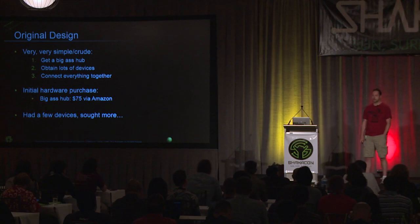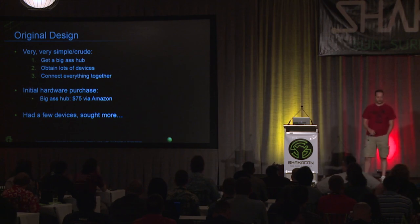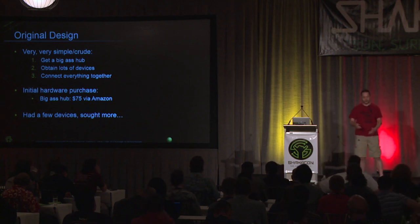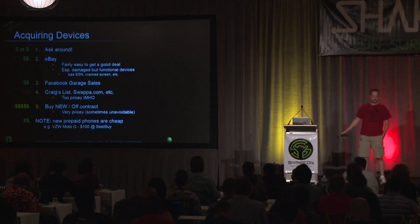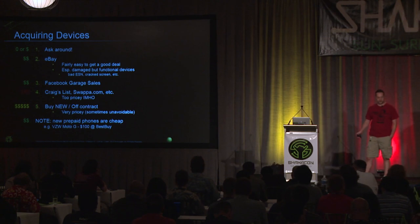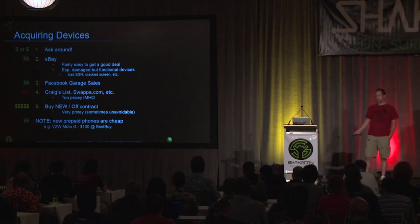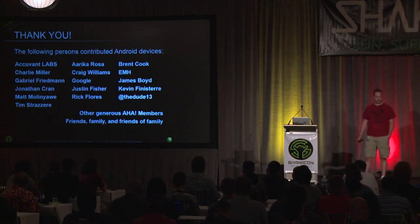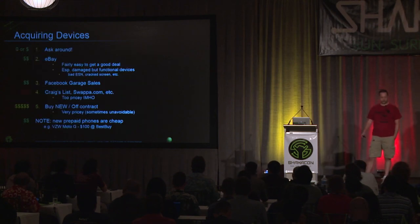The original design was pretty simple and crude — I just wanted to get a big hub and plug lots of devices into it. My initial purchase was a $75 hub called the Mondo Hub. I had some old devices in boxes, got those out. The green items on this slide are ways of getting devices I recommend, red is not recommended, and yellow is more expensive but sometimes necessary, like if you want to research a Galaxy S5. Most of the devices I got through eBay, Facebook garage sales, or asking friends.